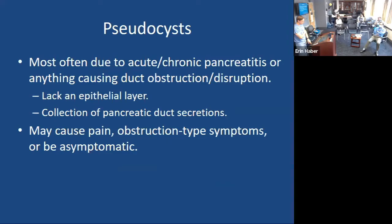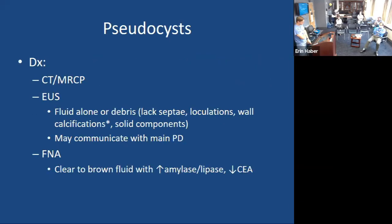Pseudocysts are most commonly due to acute or acute-on-chronic pancreatitis, or any situation leading to disruption of the pancreatic duct. They're called pseudocysts because they lack an epithelial layer — the fluid is an accumulation from ductal disruption leaking into a peripancreatic space. They can cause epigastric pain, gastric outlet obstruction symptoms, nausea, vomiting, poor PO intake, or can be asymptomatic. Diagnosis is typically made in the appropriate setting — someone with epigastric pain, a history of drinking, lipase of 4,000–30,000, and a CT showing a large fluid collection. The story pretty much makes the diagnosis.